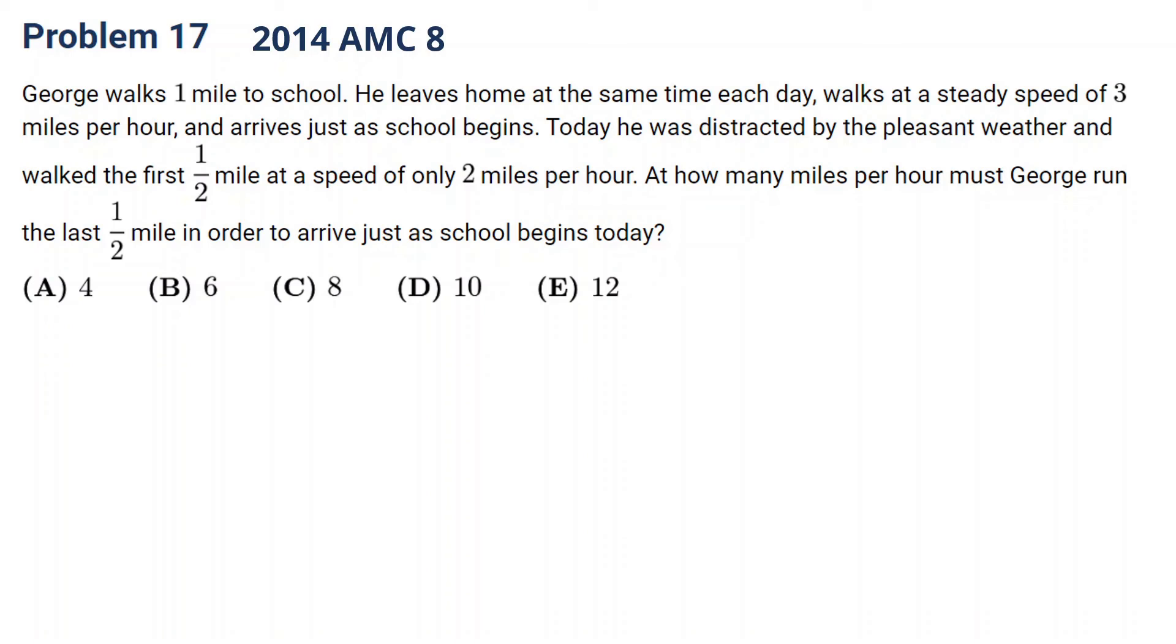Okay, welcome back. George walks one mile to school, so this is distance, one mile. He leaves home at the same time each day, walks at a speed of three miles per hour, and arrives just as school begins. Today he was distracted and walked the first half mile at a speed of only two miles per hour. At how many miles per hour must George run in order to arrive at school at the same time? What's the speed? So previously, how long did it take George to arrive at school? The time is one mile divided by three, this is one-third hour or 20 minutes, right?